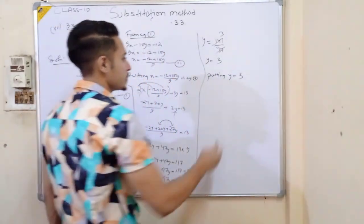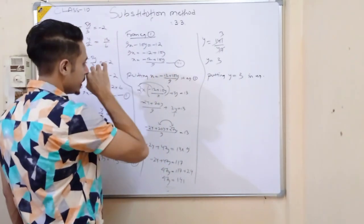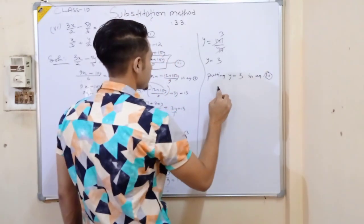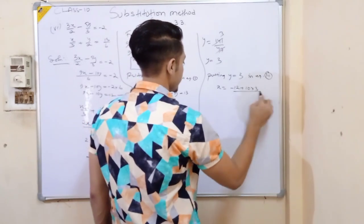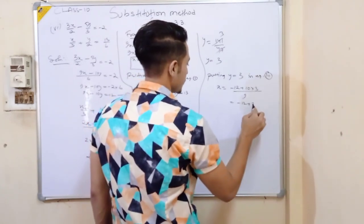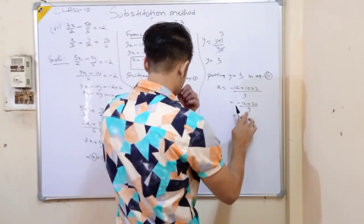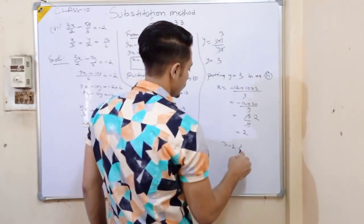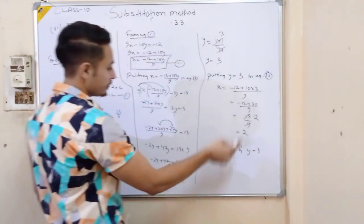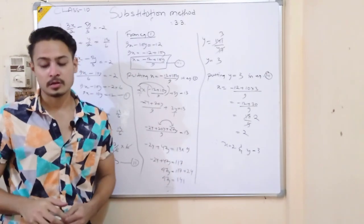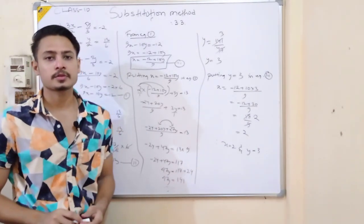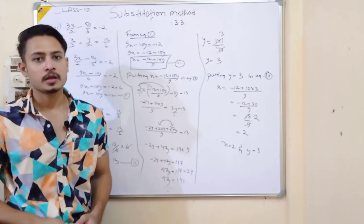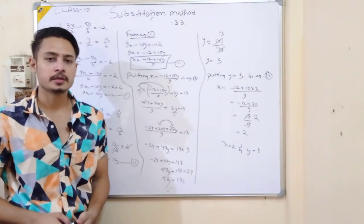Now putting y equals 3 in equation 3 to find x. x equals minus 12 plus 10 into 3 by 9, which is minus 12 plus 30 by 9, equals 18 by 9, equals 2. Therefore x equals 2 and y equals 3. Substitution method, I hope the questions are clear. Practice well. Next we'll start elimination method. Thank you.